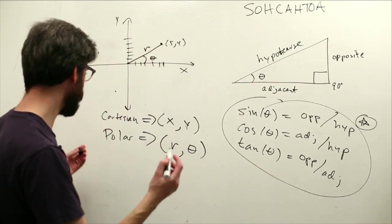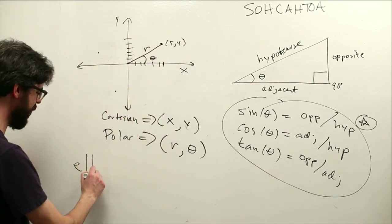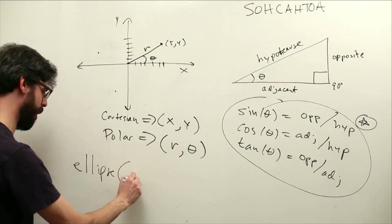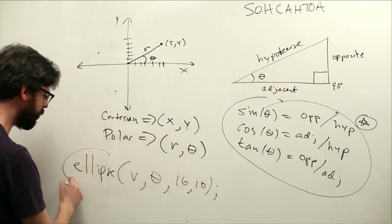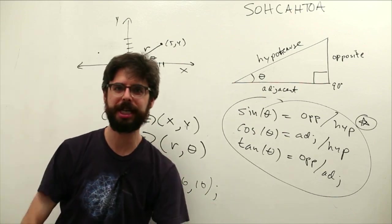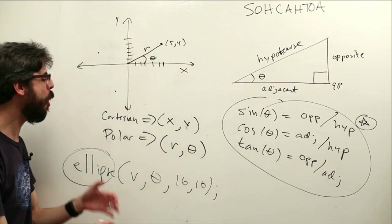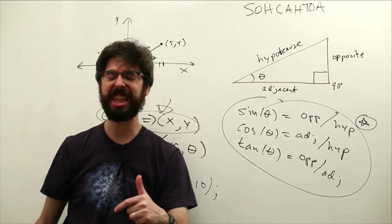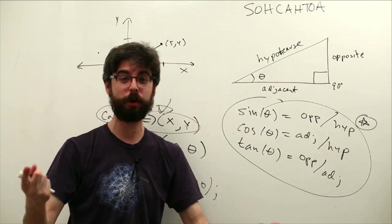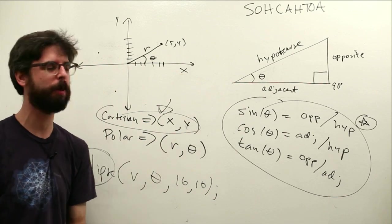Now, here's the problem. When in processing, if I go to say, hey, let's draw a circle somewhere. I can't say r, theta, right? Processing's drawing functions, point, vertex, ellipse, line, rect, they only accept Cartesian coordinates. So, if we want to think, sometimes we want to think in terms of polar coordinates, right? When would we want to think in terms of polar coordinates?